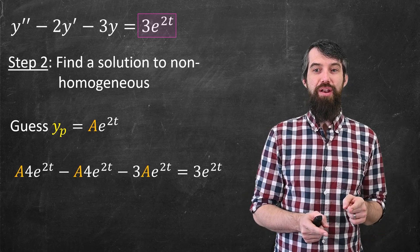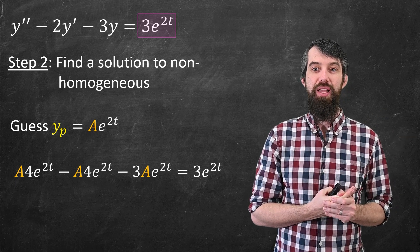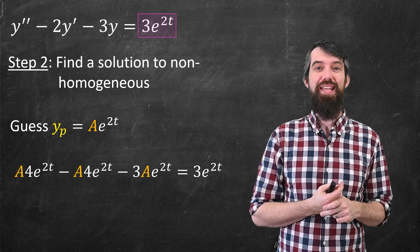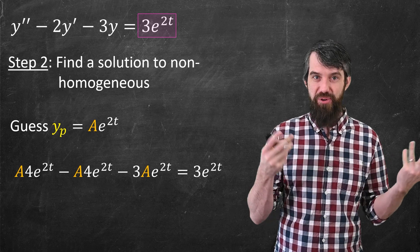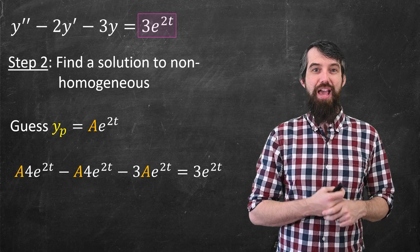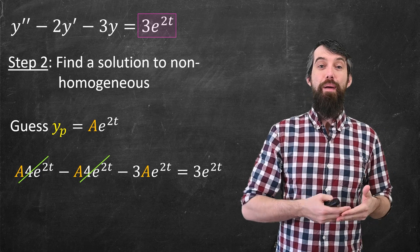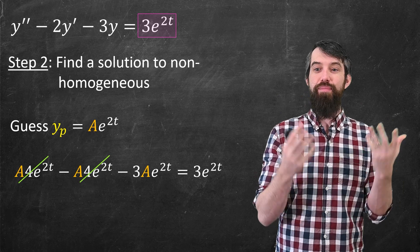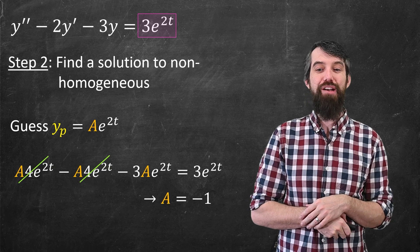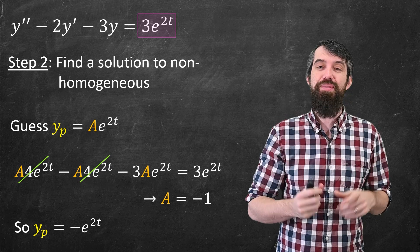Let's plug it in. Two derivatives of a e to the 2t gives 4a e to the 2t. Then minus 2 times 2a e to the 2t gives minus 4a e to the 2t. Then minus 3a e to the 2t. The plus 4a and minus 4a cancel, leaving minus 3a e to the 2t equals 3e to the 2t. So a must equal minus 1, and my particular solution is negative e to the 2t.